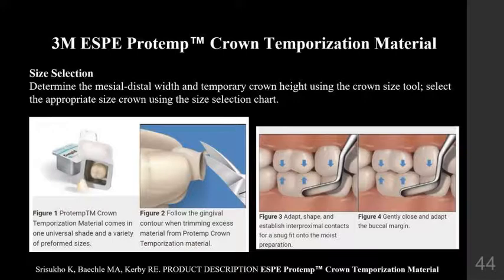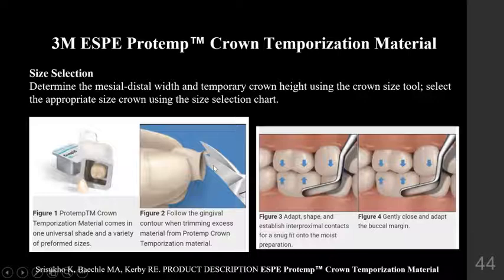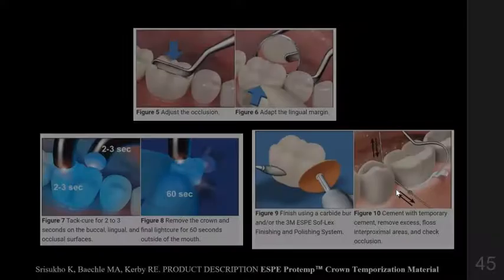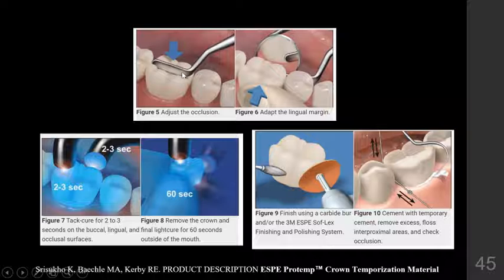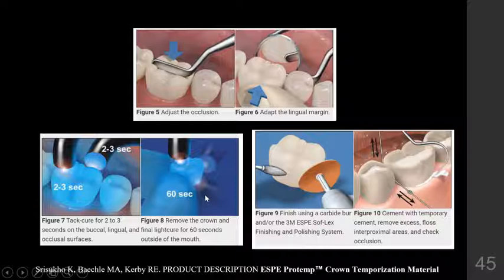3M ESP Pro Temp crown temporization materials are preformed crowns available in a variety of sizes and shades. Excess material is trimmed off, then the crown is adapted to establish interproximal contacts and the buccal margin. Occlusion and lingual margins are then adjusted. A tack cure for two to three minutes is done, followed by a full cure for 60 seconds. After that, it is removed, polished, and cemented with temporary cement.